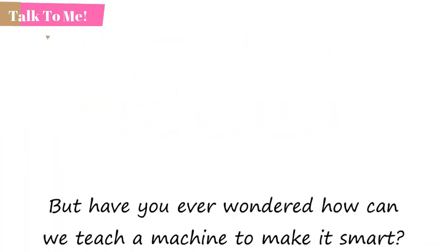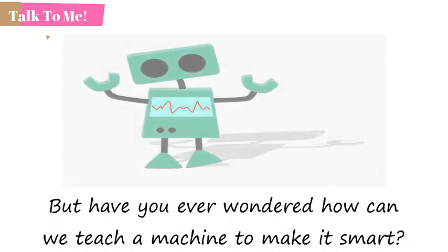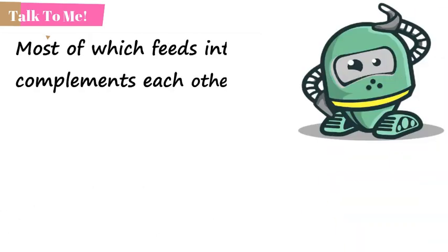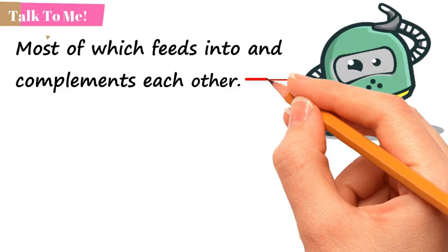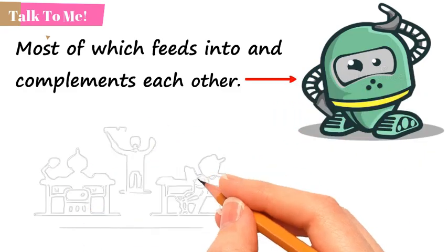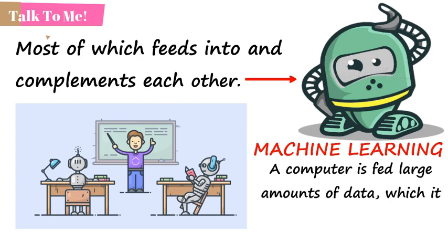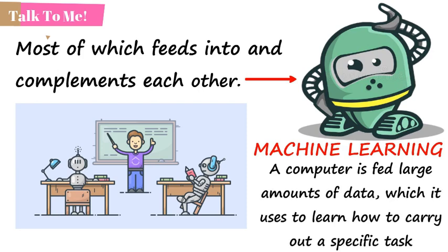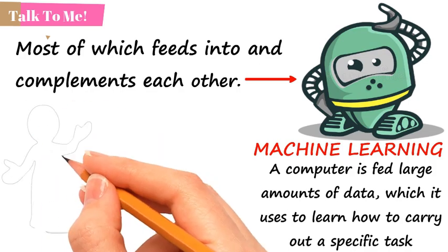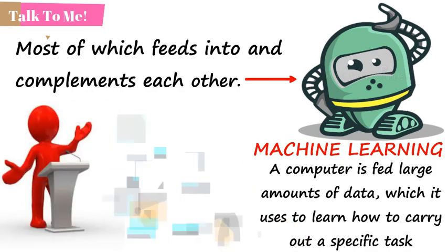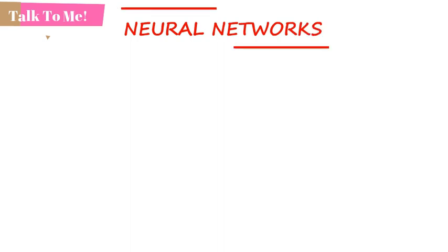But have you ever wondered how can we teach a machine to make it smart? Well, there is a broad body of research in AI, most of which feeds into and complements each other. Currently enjoying something of a resurgence, machine learning is where a computer system is fed large amounts of data which it then uses to learn how to carry out a specific task, such as understanding speech or captioning a photograph. Key to the process of machine learning is the neural networks.